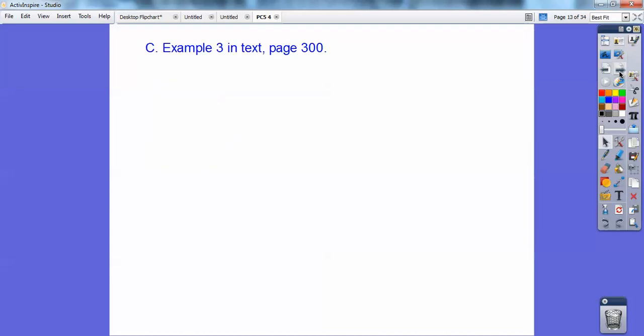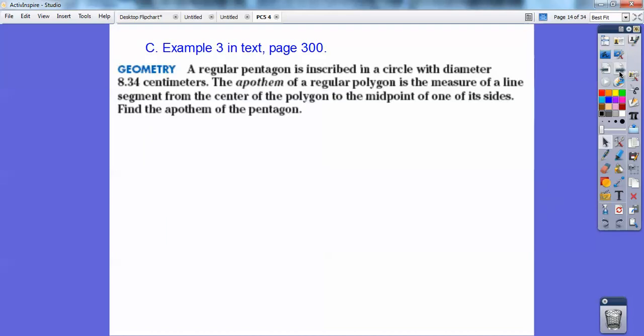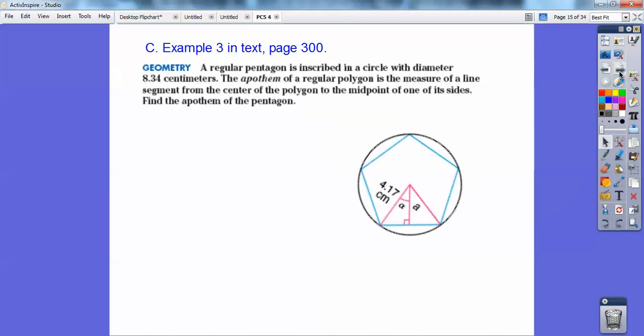Okay, this is example three in our text on page 300. A regular pentagon, five sides is pentagon, is inscribed in a circle with diameter 8.34 centimeters. So the apothem of the regular polygon is the measure of a line segment from the center of the polygon to the midpoints of one of its sides. They want us to find the apothem.